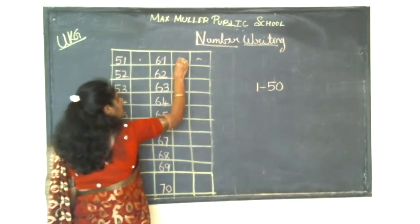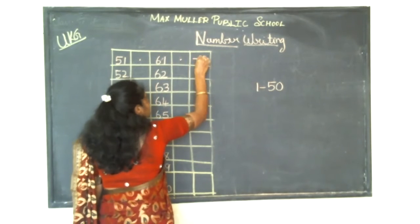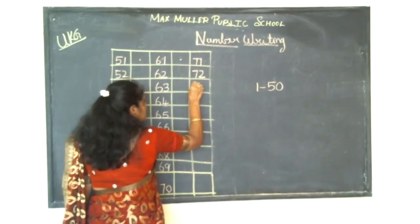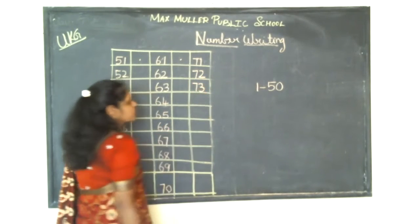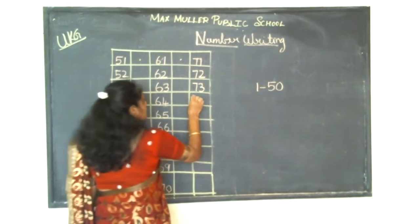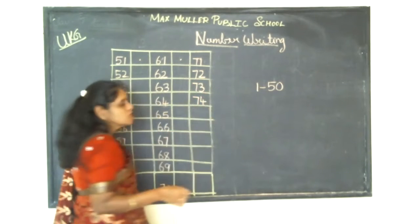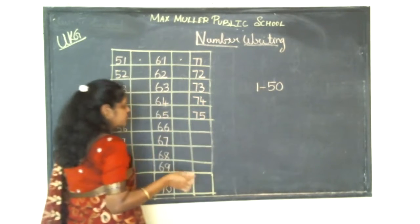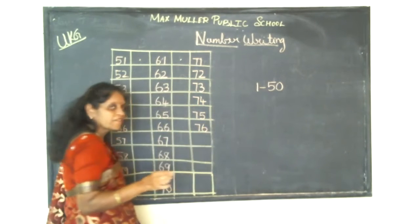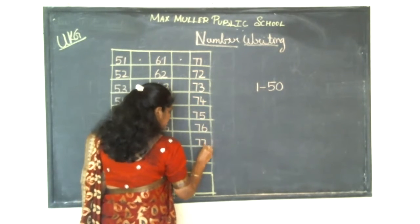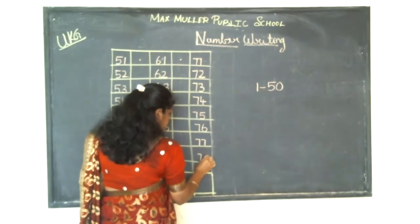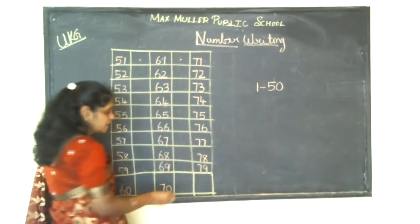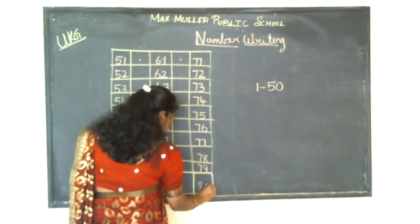Keep a dot over here. 7, 1 — 71. 7, 2 — 72. Say and write, children. 7, 3 — 73. 7, 4 — 74. 7, 5 — 75. 7, 6 — 76. 7, 7 — 77. 7, 8 — 78. 7, 9 — 79. 8, 0 — 80.